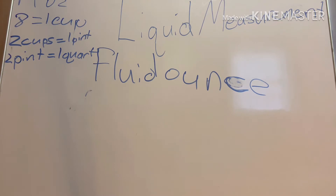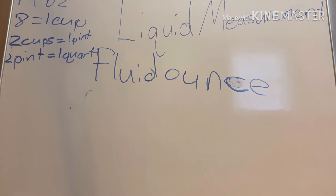A common question a teacher might ask is: how many fluid ounces are in a quart? Here's how you think about it: we know it takes 16 fluid ounces to make one pint. Since you need to double the pints to get a quart, you also double the ounces. So 16 plus 16 is 32 — there are 32 fluid ounces in one quart.